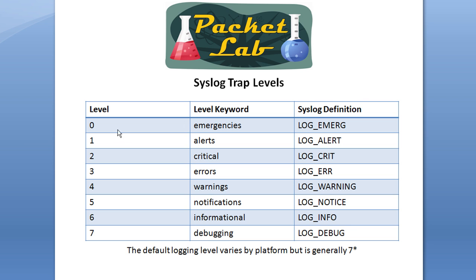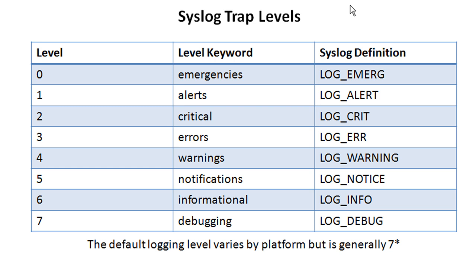This is just a nice table of the same information. One thing to note: the default logging level varies by platform but is generally 7 for local syslog messages. So if you enable logging buffered, you're generally going to get level 7, which means all messages including debugging. With remote syslog, when we look at the default logging level on the CLI it'll actually be at 6. So on your local device it defaults to 7, but when sending syslog messages to a remote server it generally defaults to 6 — that's also good fodder for a test question.